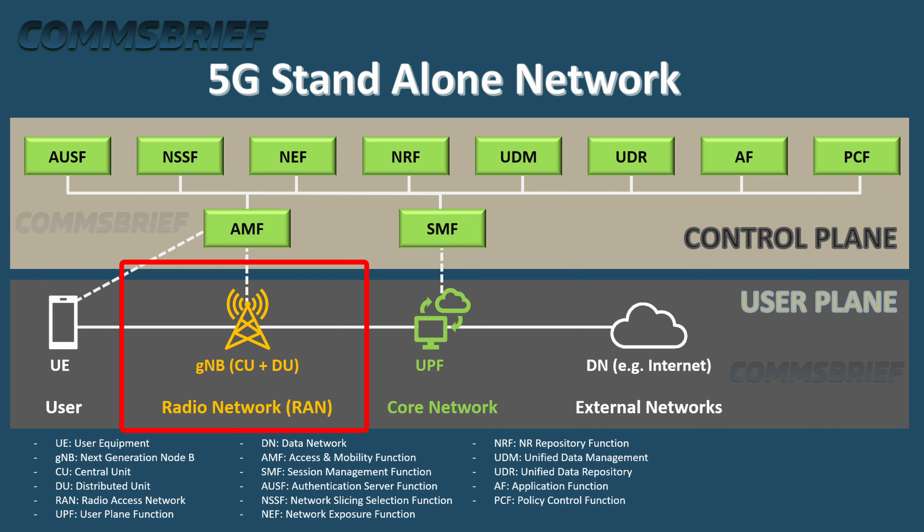If you look at this diagram on the screen, it may look a little busy, but just focus on this red rectangle — this is the NG-RAN in the overall mobile network architecture. The green boxes and the icons are the core network, and everything inside this rectangle is the radio network. The radio network in 5G consists of the base station called the gNB.